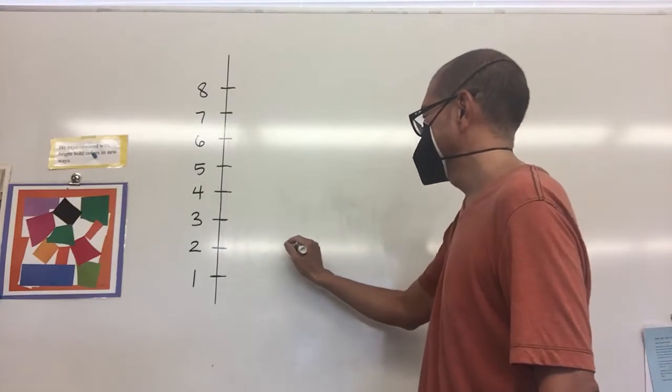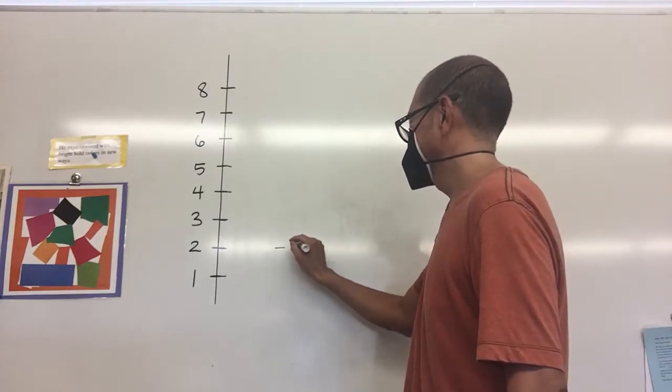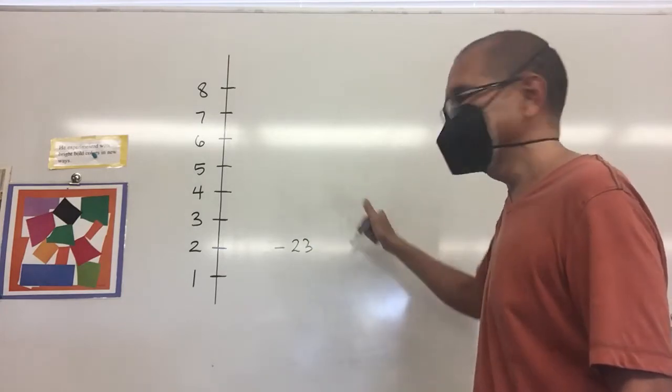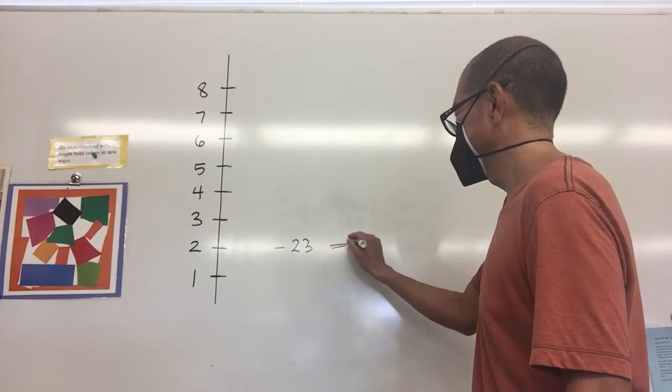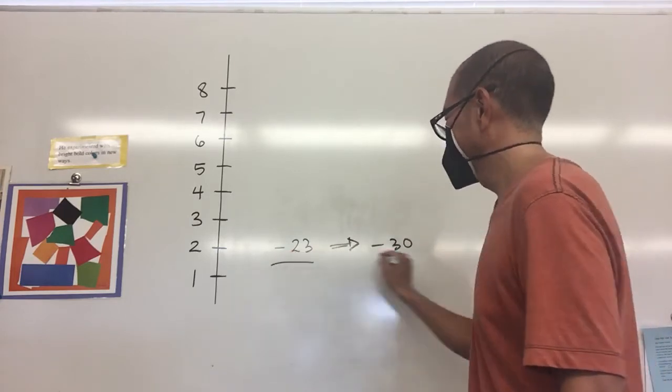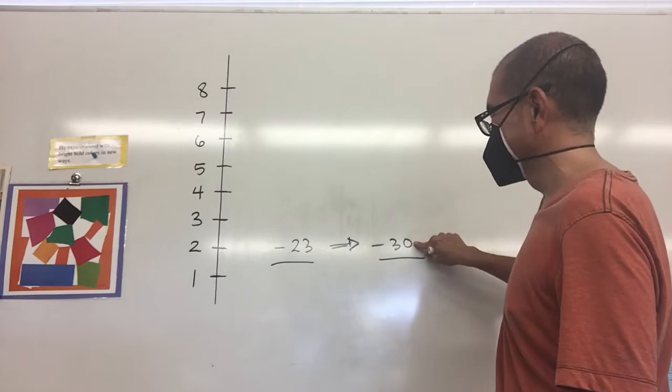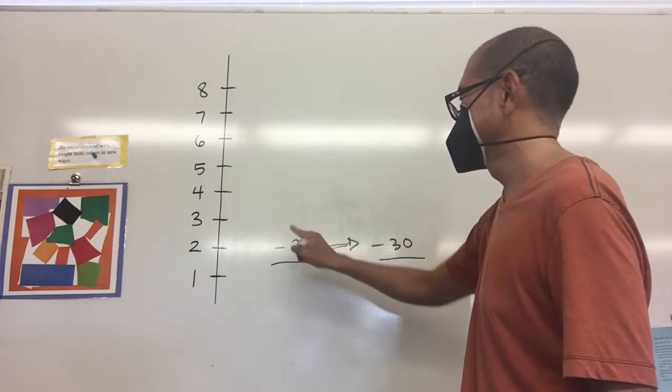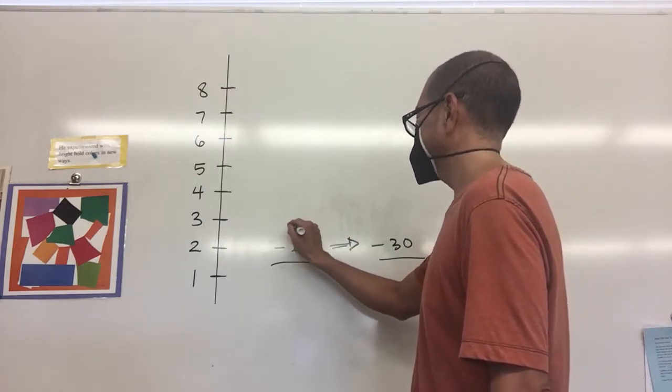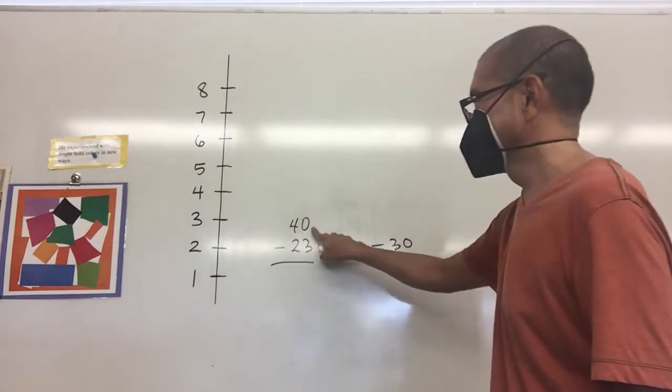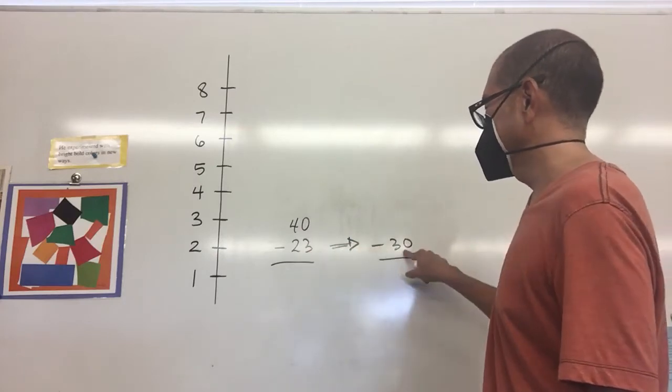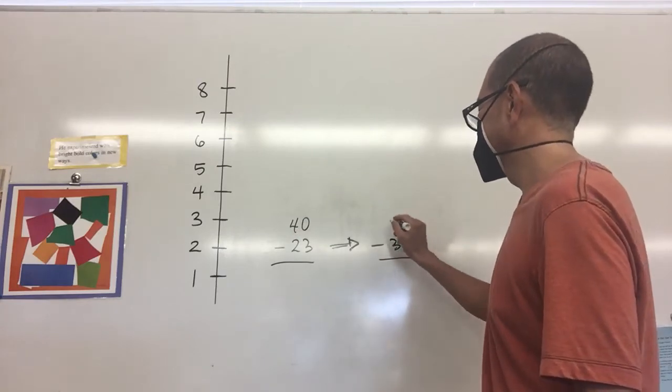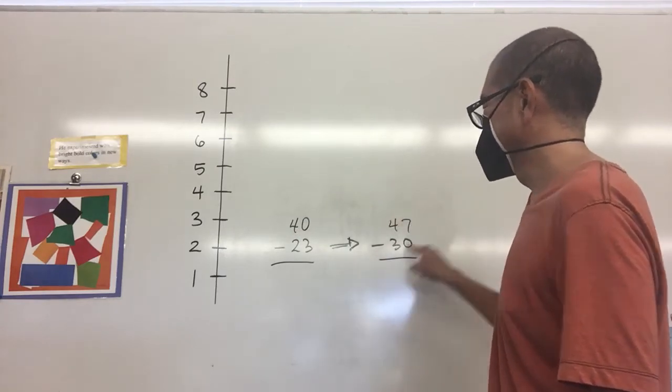Let's look at another example. If we have minus 23, the next multiple of 10 that we go up to is minus 30 because subtracting a zero from a number is a whole lot easier. Let's just say that this number up here is 40. So from 23 to 30 I add 7, so from 40 I have to add 7 and I get 47, and then I subtract.